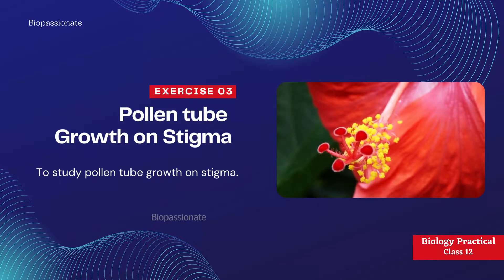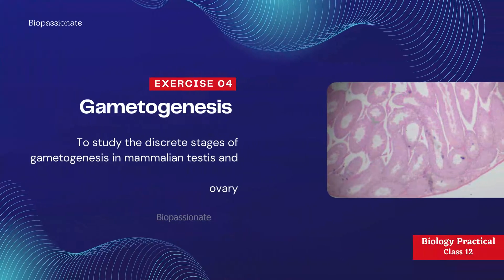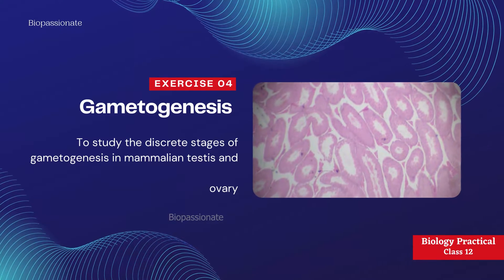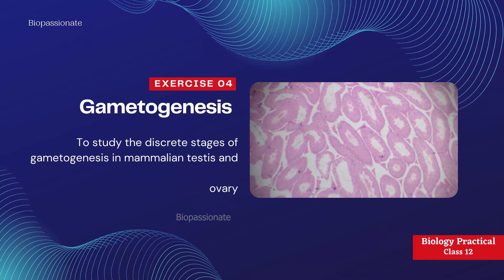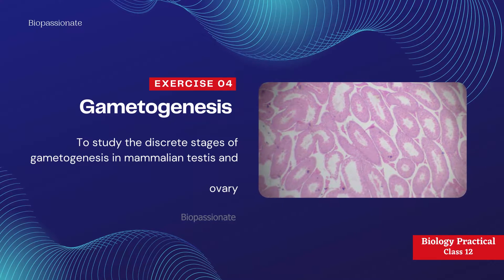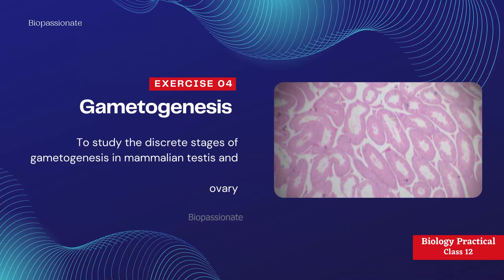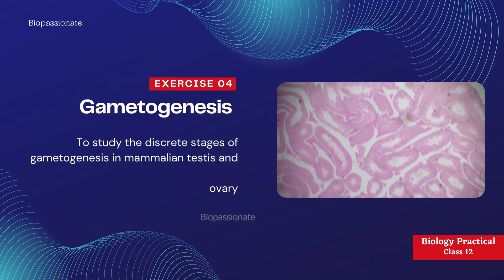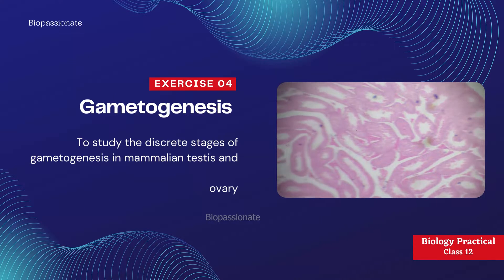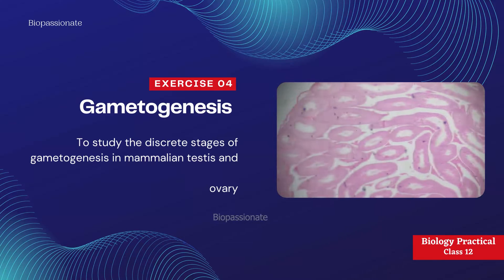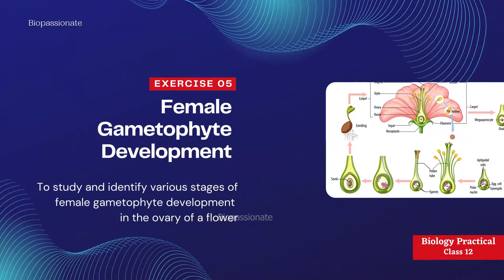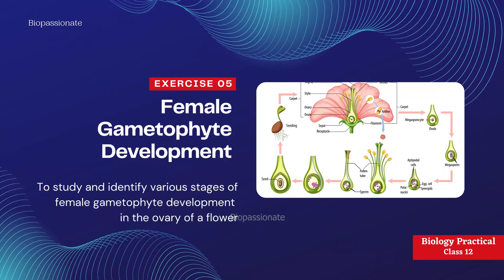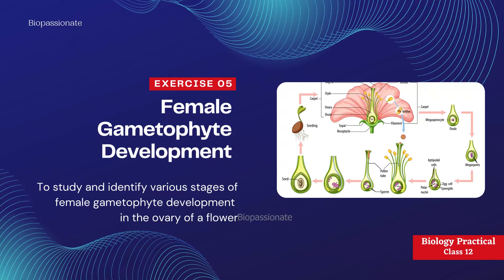This experiment is compulsory in your practical examination. Exercise number four: gametogenesis — to study the discrete stages of gametogenesis in mammalian testes and ovary, including spermatogenesis and oogenesis. This experiment is just demonstrative; students need to identify the photograph or the slide, and one question is compulsory.